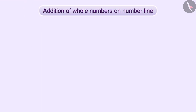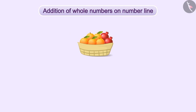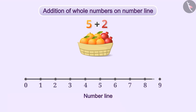Look at this basket. There are five fruits in it. If we keep two more fruits with them, then how many fruits will be there? To find the value of this, we need to add five and two. Let's express it on the number line.